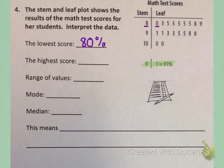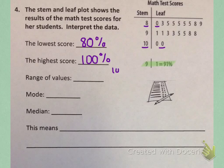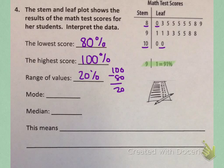The highest score is the last value in our stem and leaf plot. The last stem is 10 and the last leaf is 0, so the highest score is 100%. The range of values is simply 100 minus 80, which is 20. So the range is 20% — the scores differ from each other by 20%.